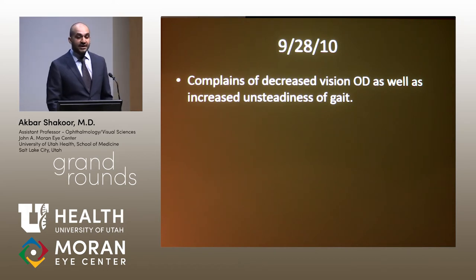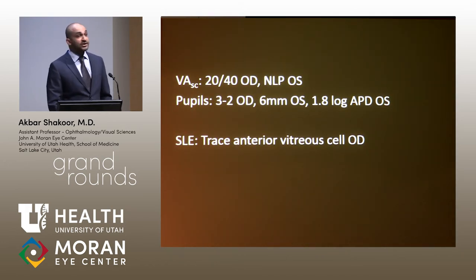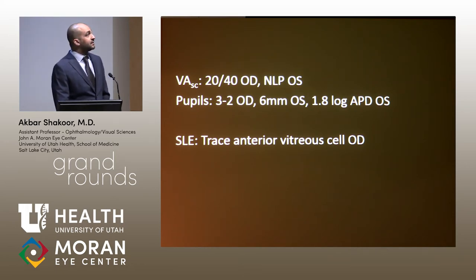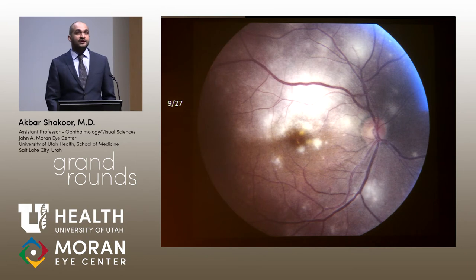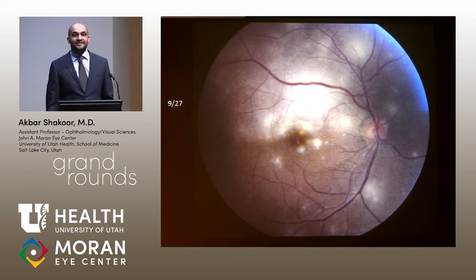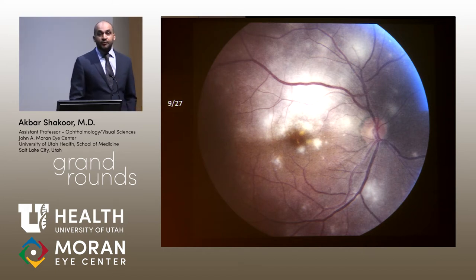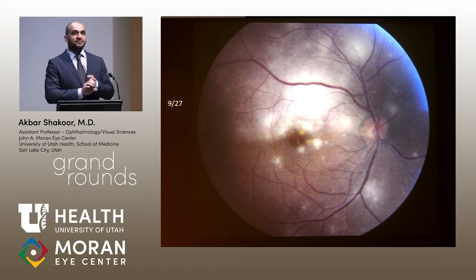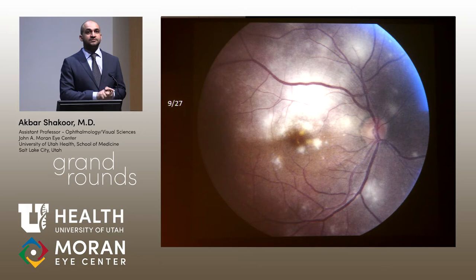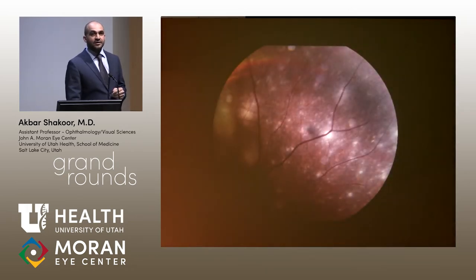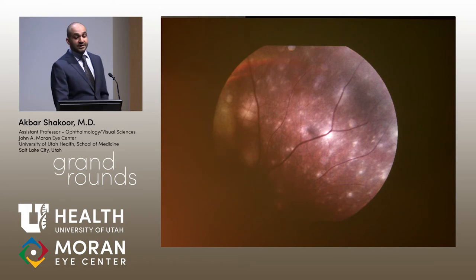When he returned a month later, he complained of decreased vision in his right eye and unsteadiness of gait. He was now no light perception in the left and 20/40 in the right eye with a complete afferent pupillary defect. We observed retinal whitening — notably with a surprisingly clear view, which in a patient with uveitis is unusual — and areas of retinal whitening in the periphery.